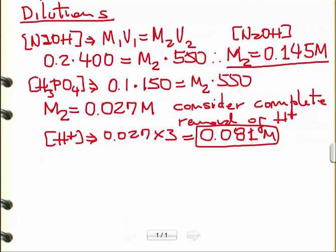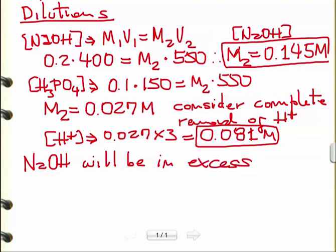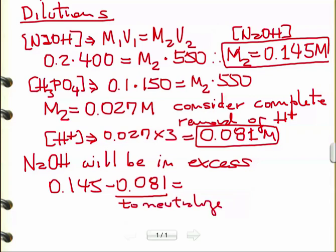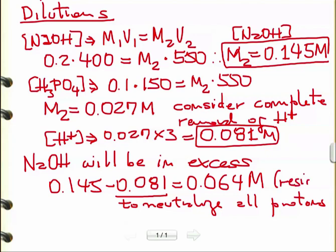This case is easy because NaOH is in excess over phosphoric acid for all the protons. NaOH is able to remove all the protons available. The concentration of NaOH in excess will consume all the protons from phosphoric acid, remaining as an alkaline solution. We initially had 0.145 molar NaOH, but it's going to use up 0.081 to neutralize all protons from phosphoric acid, so 0.064 molar remains as the residual concentration of NaOH.